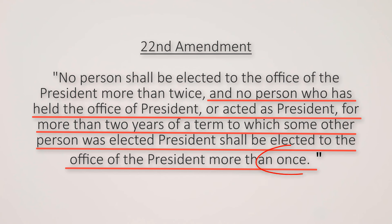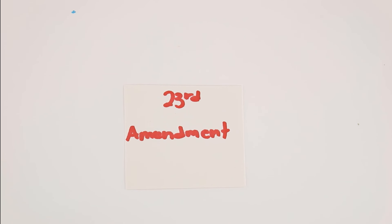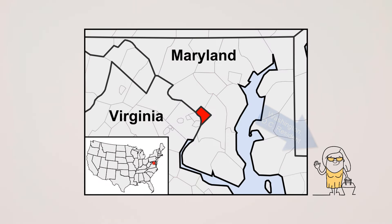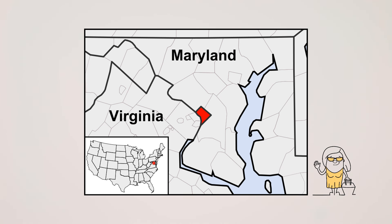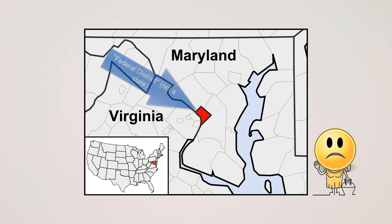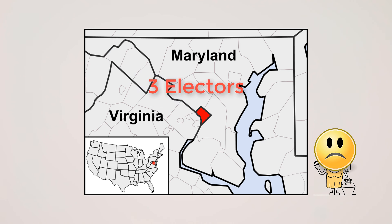The 23rd Amendment gave Washington, D.C. three presidential electors, essentially giving its residents the right to vote in presidential elections. Before this amendment, residents of Washington, D.C. didn't have any electors to cast votes for them because they are considered a federal district and not a state. But now they receive three electors, the same number as the least populous states, and their residents are now represented in presidential elections.